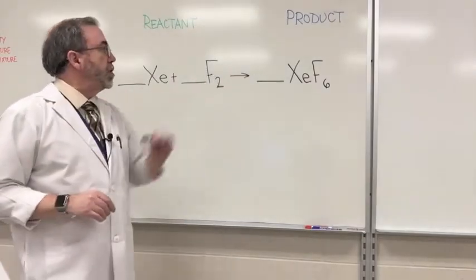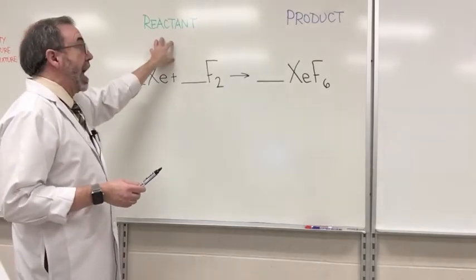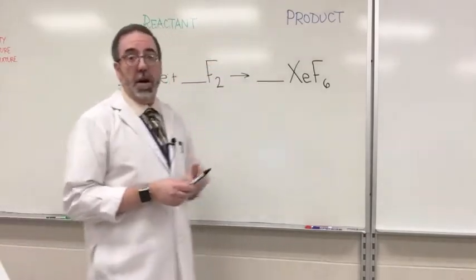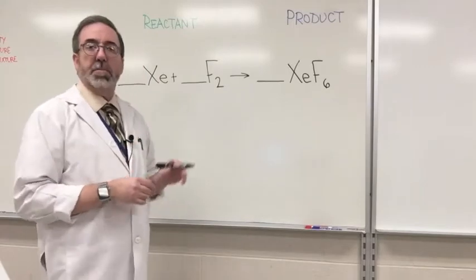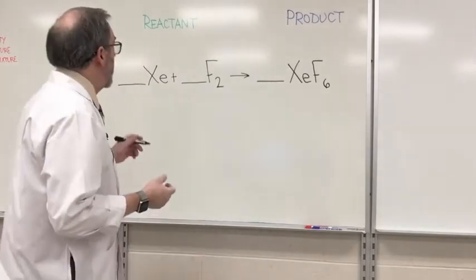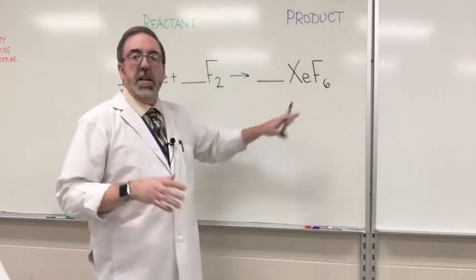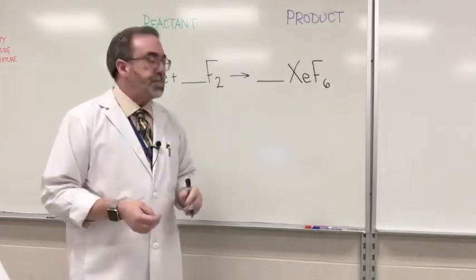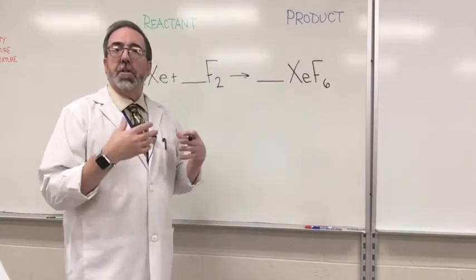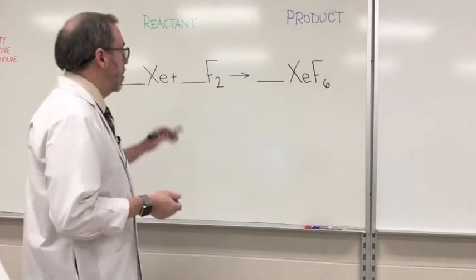So I've written this first one up here on the board. We always have to remember that this side of the equation is going to be called the reactant, this side the product. We'll go over that more in class but I'll just leave them up there so you see it. Now when we're doing this we want this and this to equal out so that the law of conservation of mass is upheld.